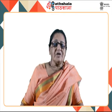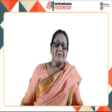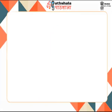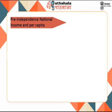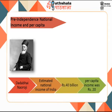Before independence, we did measure national income and per capita income in several ways. Especially under British rule in India, Dadabhai Naoroji measured national income and per capita income. In 1873, he had estimated that the national income of India in 1867 to 1868 was Rs. 40 billion, whereas the per capita income was Rs. 20. This revealed that colonial rule in India was not at all showing economic development.